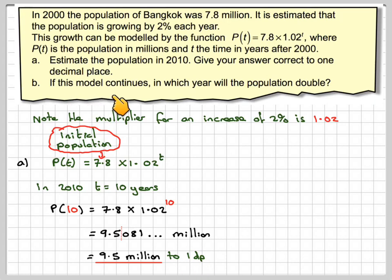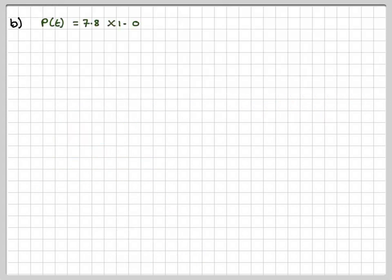If the model continues, in which year will the population double? So we've got P(T) = 7.8 × 1.02^T.